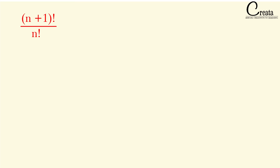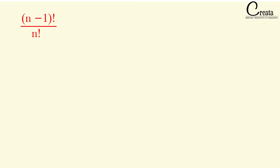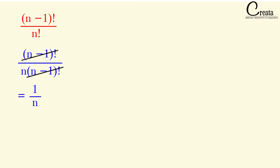Let's solve some general questions. First: (n+1)! ÷ n!. We rewrite (n+1)! as (n+1) × n!, so n! cancels and the answer is n+1. Second: (n−1)! ÷ n!. We rewrite n! as n × (n−1)!, so (n−1)! cancels and the answer is 1/n.